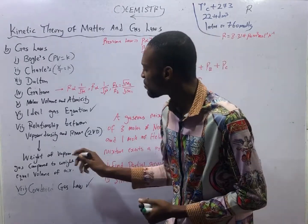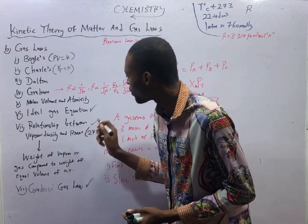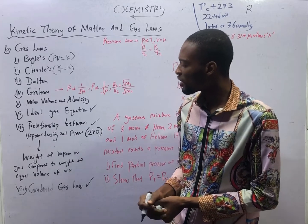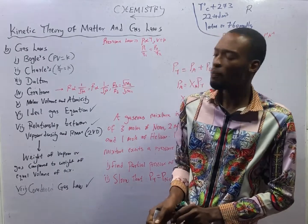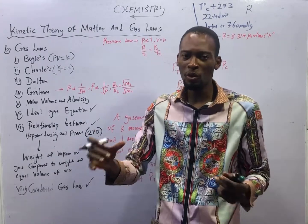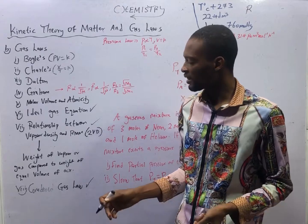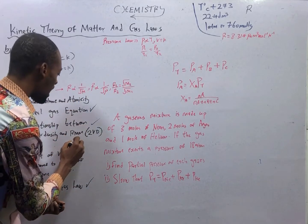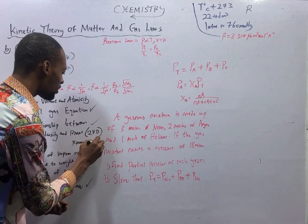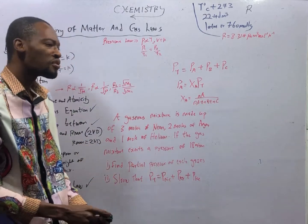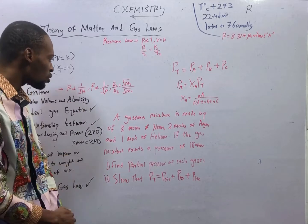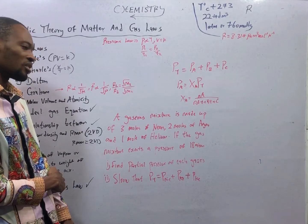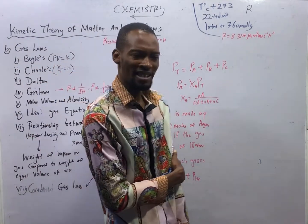That brings us to the relationship between relative molecular mass and vapor density. Vapor density is the weight of vapor or gas compared to the weight of equal volume of air. Relative molecular mass is equal to 2 times vapor density. If I give you vapor density, to find mass, multiply the vapor density by 2. If I give you relative molecular mass, to find vapor density, divide the relative molecular mass by 2.